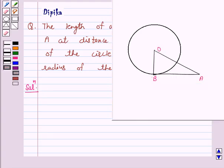We are given a circle with center O. AB is a tangent to the circle. We are given the length of a tangent from a point A at distance 5 cm from the center of the circle is 4 cm. So we have given OA is equal to 5 cm and AB is equal to 4 cm.